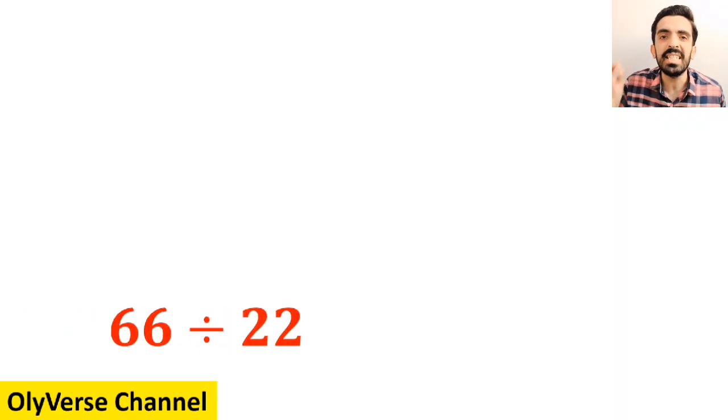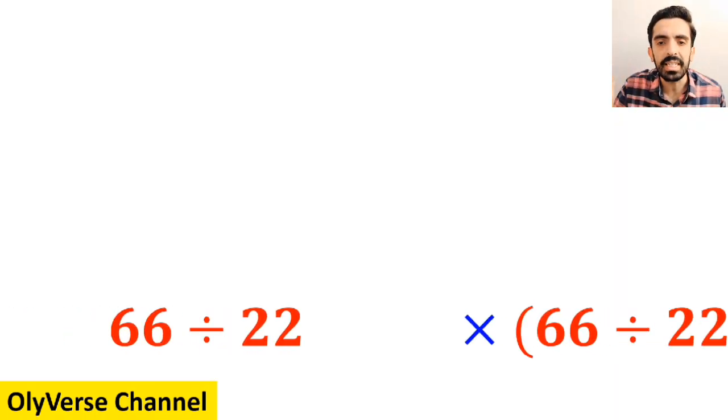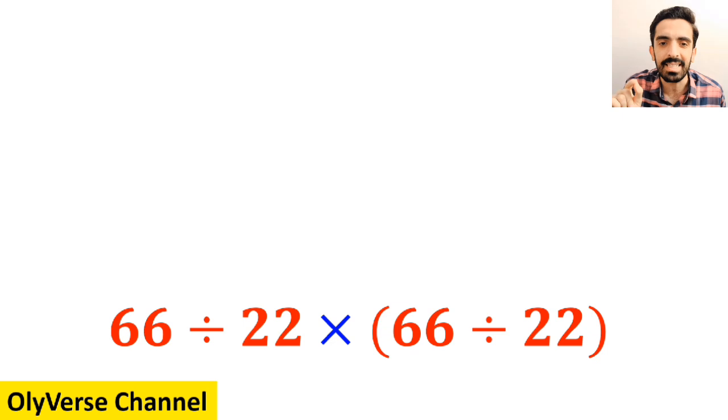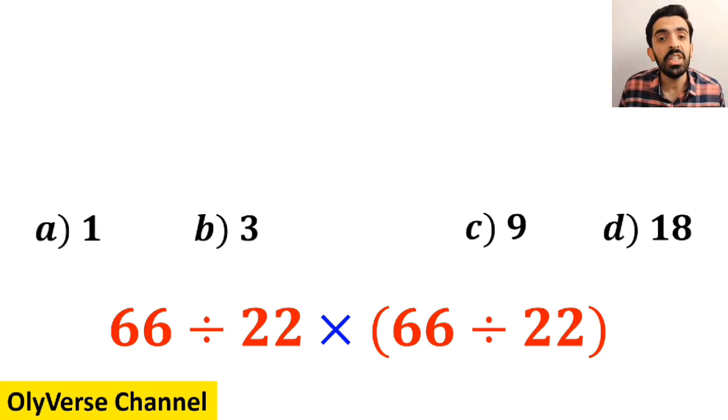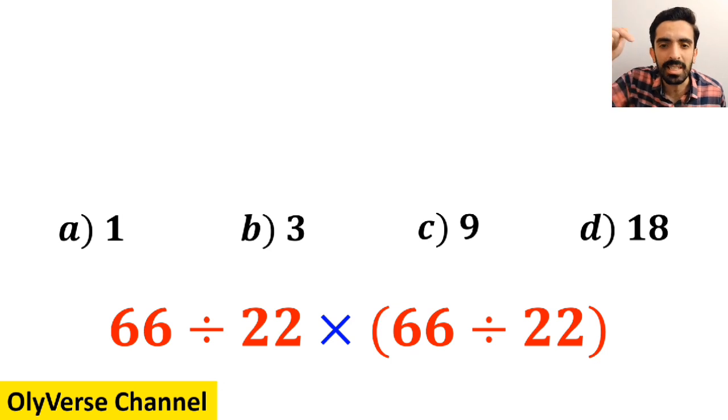What is the value of the expression 66 divided by 22 multiplied by open parenthesis 66 divided by 22 close parenthesis? Which option do you think is the correct answer to this question?